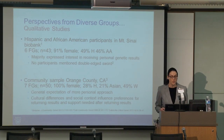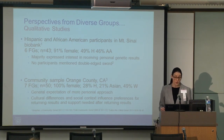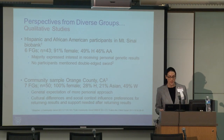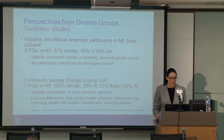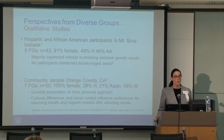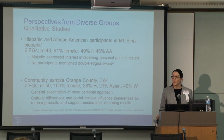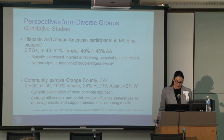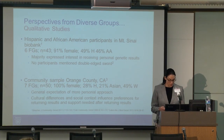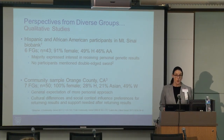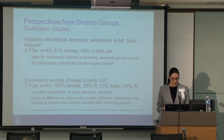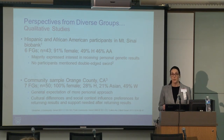The second study involved a community sample in Orange County, California, focused on maternal perspectives on return of results for their children — seven focus groups with 50 participants, all female, 28% Hispanic and 21% Asian. What was learned is that there was a general expectation of a more personal approach to returning genetic results — defined as more dynamic and more flexible — rather than web-based access to genetic results as a research participant. Latinas in particular expected interventions: education, personal guidance for follow-up, and risk-reducing steps for their children who might have identified disorders.